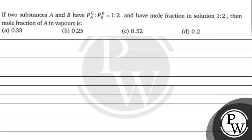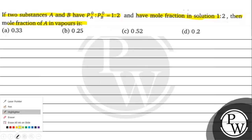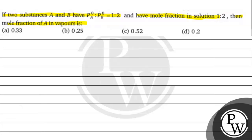Hello with Joe. Let's read this question. The question says if two substances A and B have P naught A to P naught B ratio 1 is to 2, and have mole fraction in solution 1 is to 2 ratio, then find the mole fraction in the vapor phase. Option A: 0.33, Option B: 0.25, Option C: 0.52, Option D: 0.2. The key concept for this question is Raoult's Law.